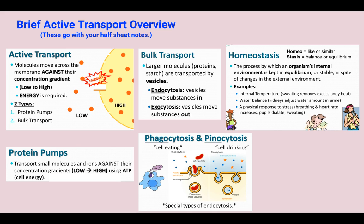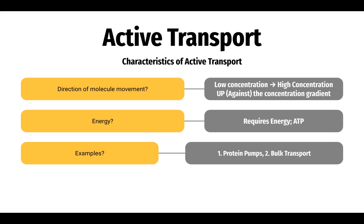Cells do this on a microscopic level. To recap: active transport is moving from low concentration to high concentration — going up the concentration gradient, against it. This is not the way molecules naturally like to move, which is why it requires energy — ATP, adenosine triphosphate. Examples include protein pumps, the most famous being the sodium-potassium pump, and bulk transport, which involves endocytosis and exocytosis.